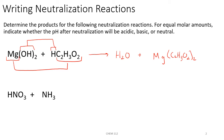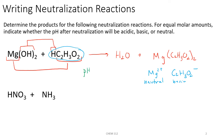Looking at the salt we formed, if we break it up, we have Mg²⁺ ion and the acetate anion. The magnesium 2+ ion would be neutral because it came from a strong base like magnesium hydroxide — it won't undergo hydrolysis. The acetate anion is going to be basic because it came from a weak acid, acetic acid. Therefore, after neutralization, the pH would be greater than 7, or basic overall.